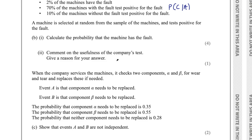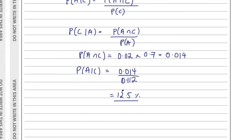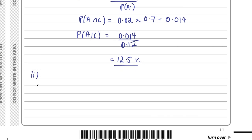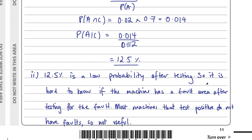Part 2 says comment on the usefulness of the company's test. If you test something for a fault and it says it has a fault, you'd want a high percentage to actually have something wrong. We're only getting 12.5%. Out of all machines testing positive, only 12.5% actually have something wrong — if they're sending people out to repair machines, in 87.5% of cases there won't actually be a fault to repair. So: 12.5% is a low probability after testing, making it hard to know if the machine has a fault. Not a useful test.